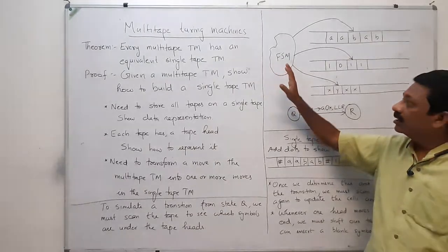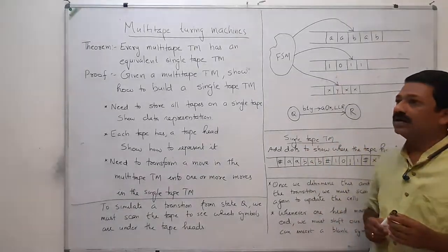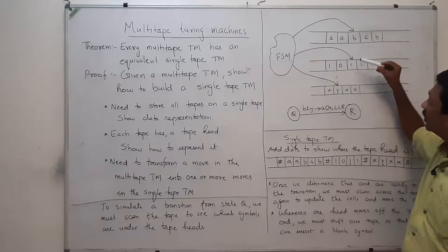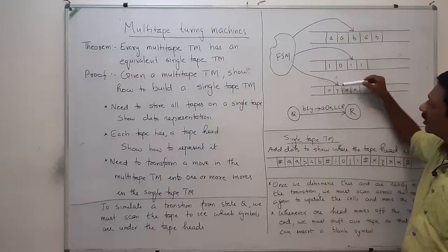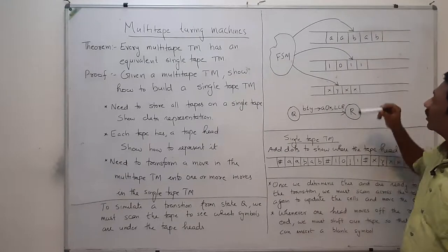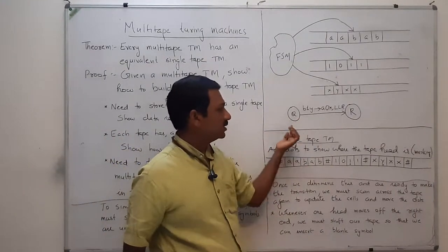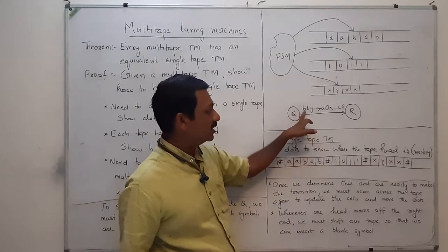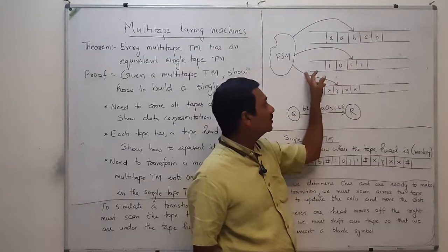The state information depends on reading multiple tapes at the same time. Multiple tapes are read at the same time. As an example, here we have three tapes — one, two, and three. The finite control is reading B on the first tape, 1 on the second tape, and Y on the third tape. The finite control is now in state q, and it is reading B, 1, and Y.